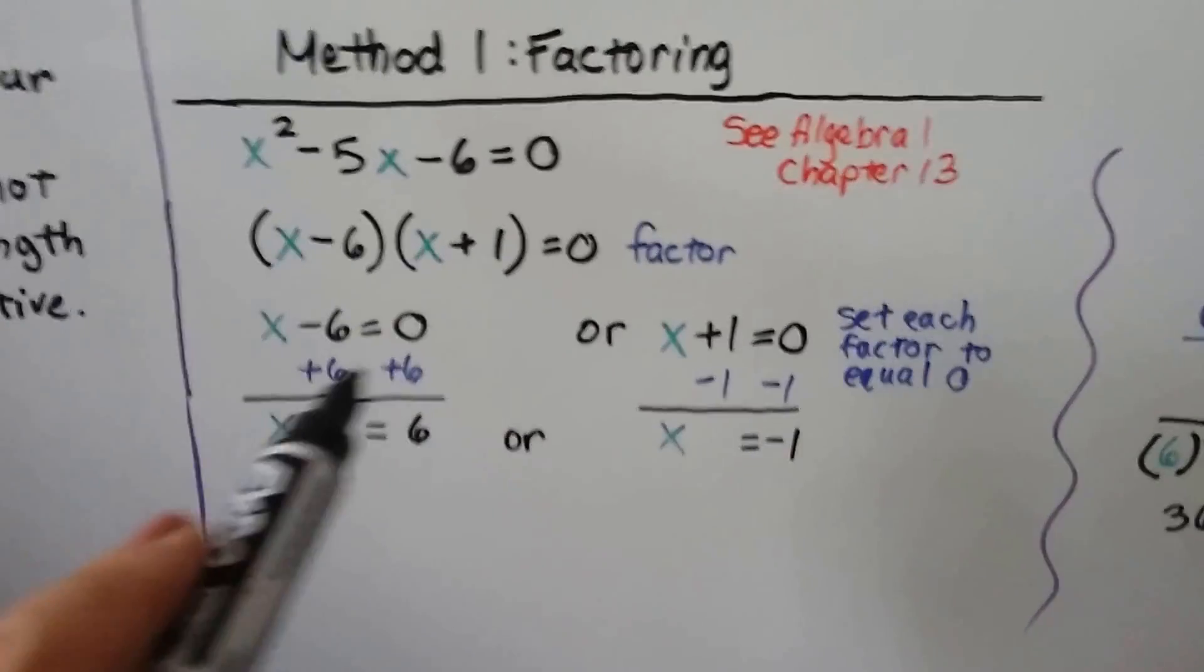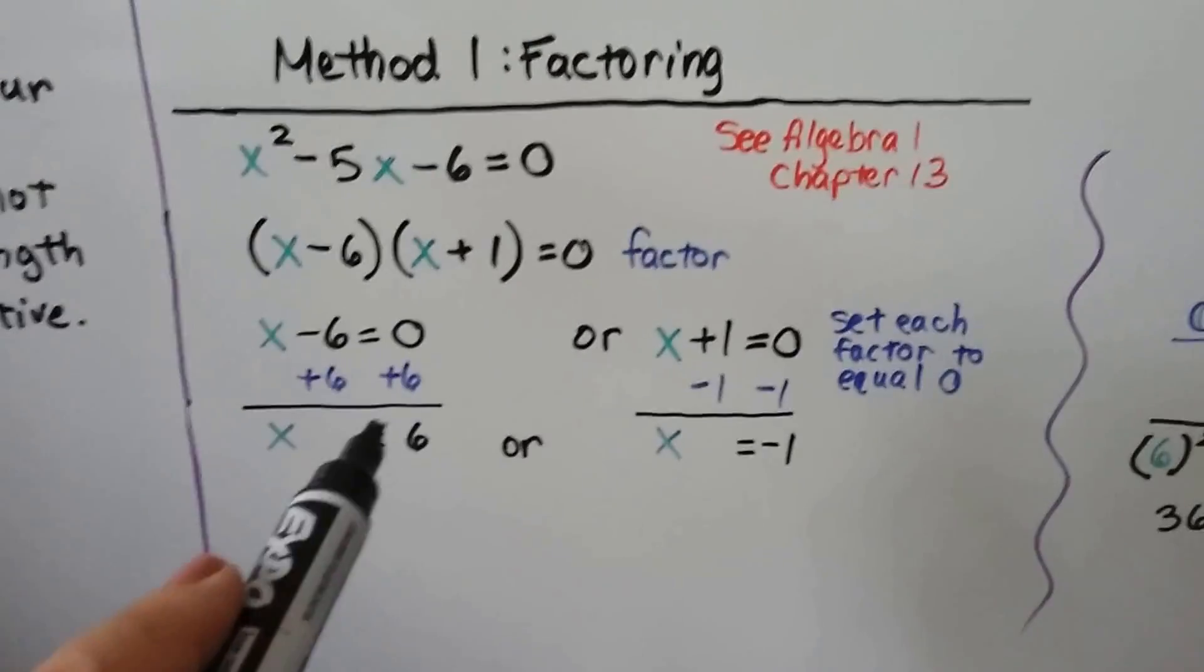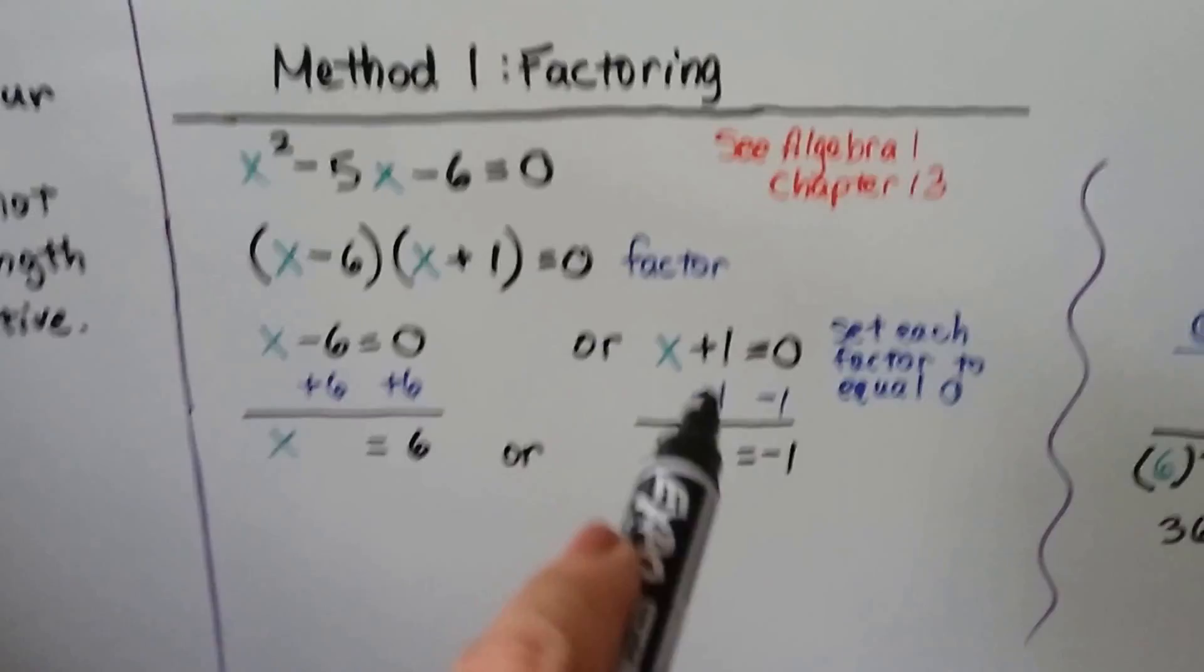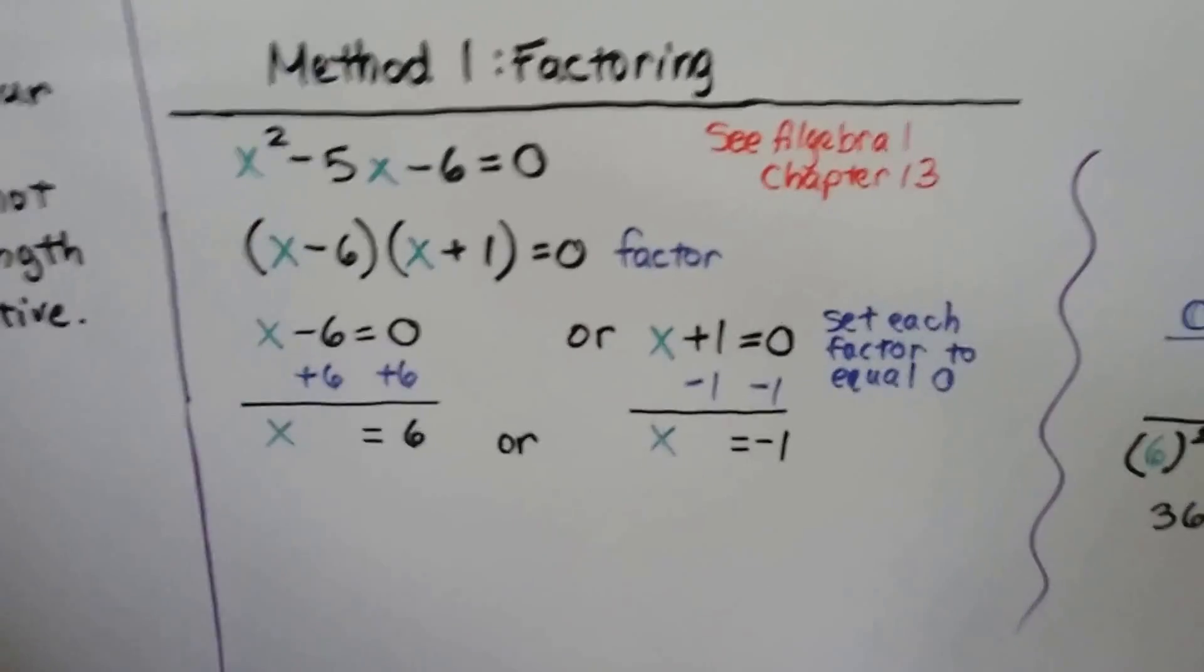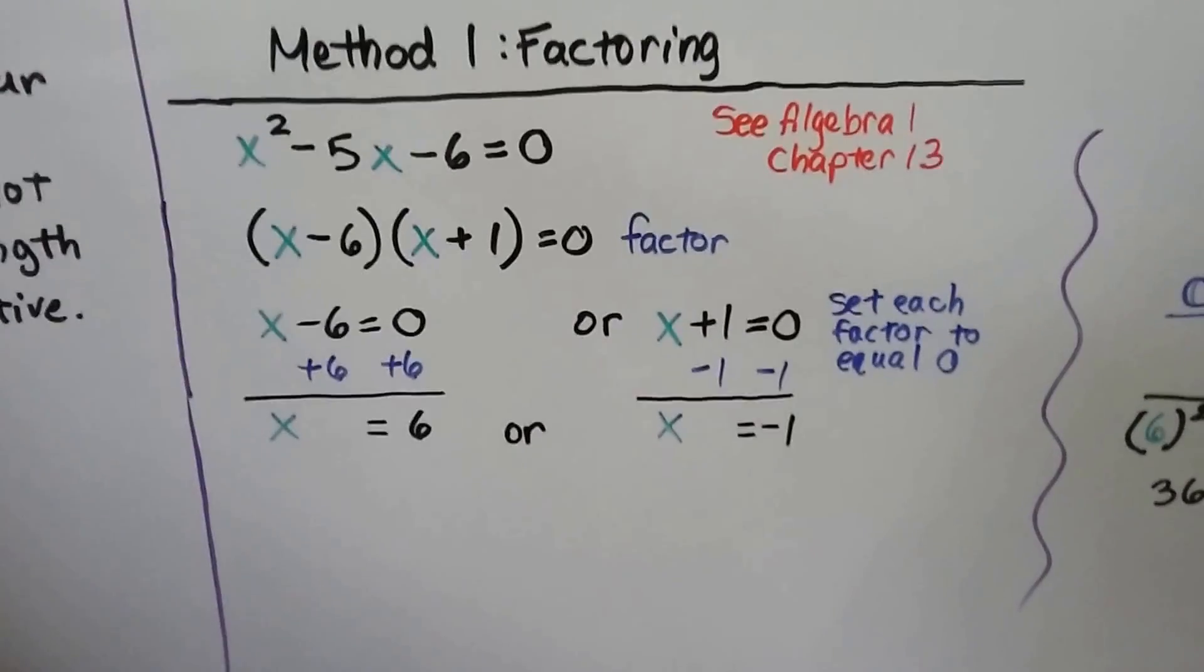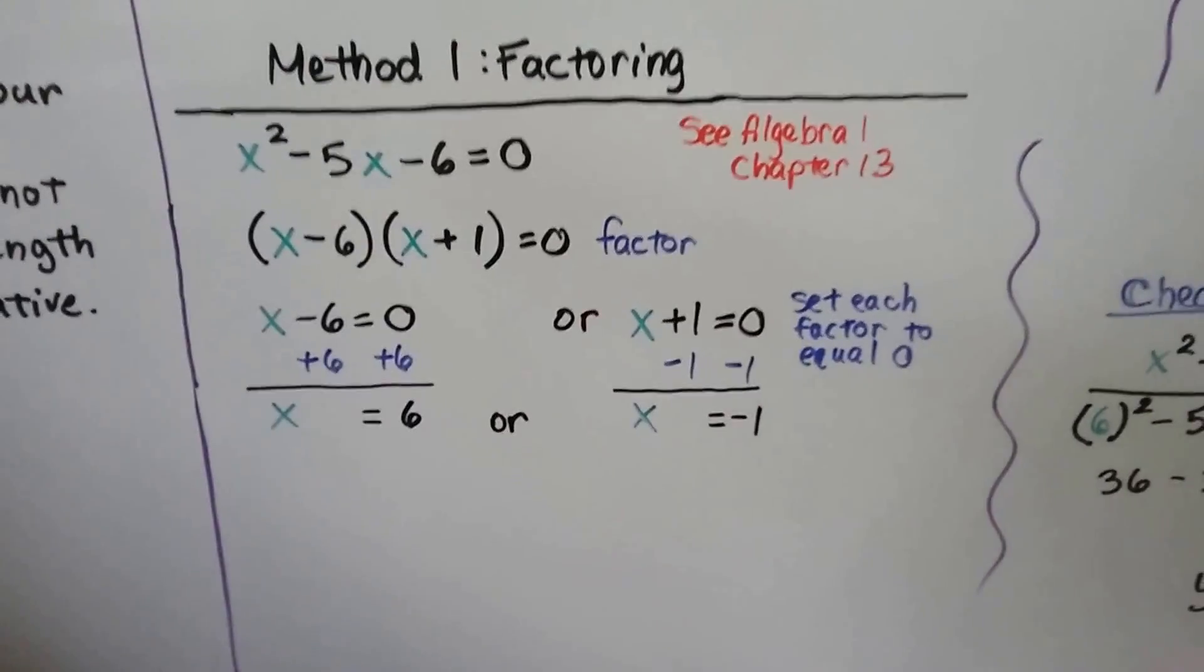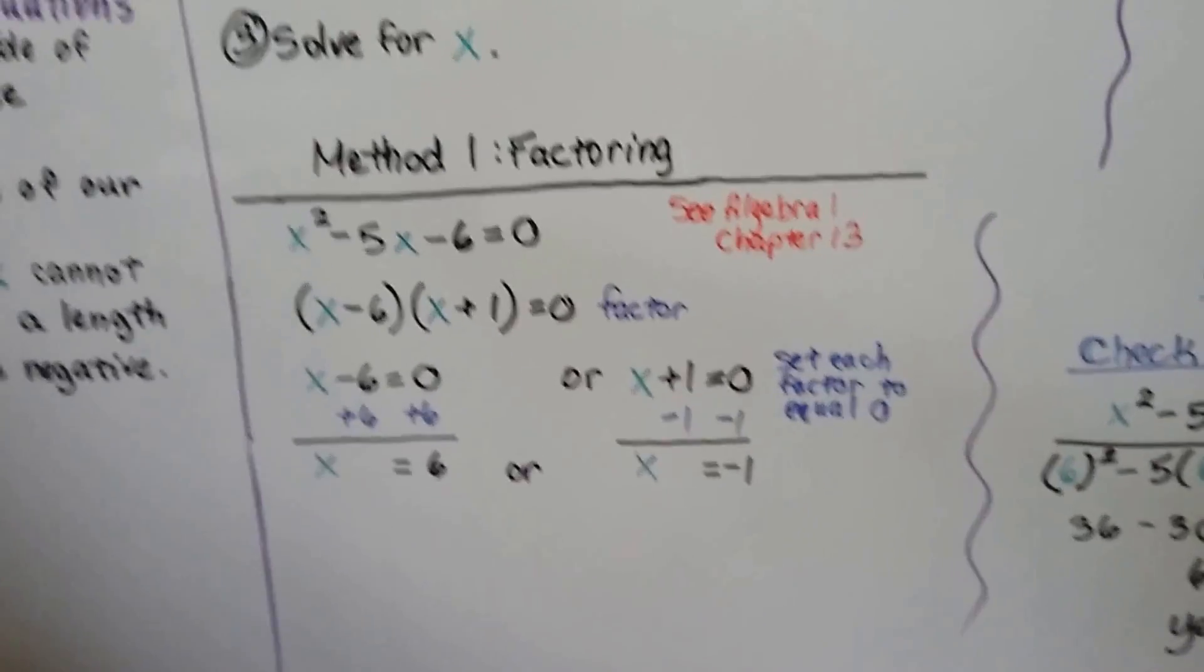We add 6 to both sides to make a zero pair here. We have x = 6. We do minus 1 on both sides to get rid of this and make a zero pair, and we have x = -1. So x = 6 or x = -1.